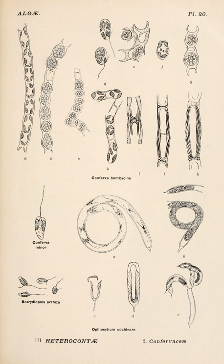Yellow-green algae, or the Xanthophycei, are an important group of heterocont algae. Most live in fresh water, but some are found in marine and soil habitats. They vary from single-celled flagellates to simple colonial and filamentous forms.